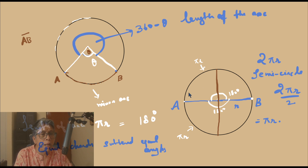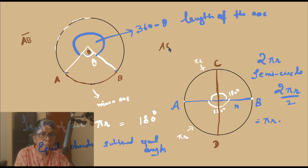I have divided the circle into 4 equal parts, right? And every arc is also equal. If I call these points C and D, then arc AC = arc CB = arc BD = arc DA.